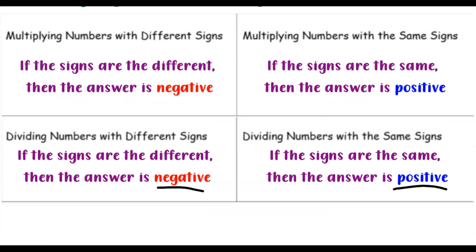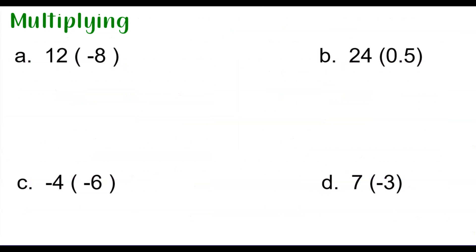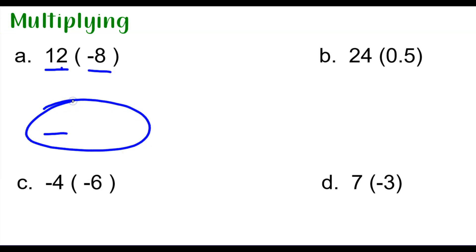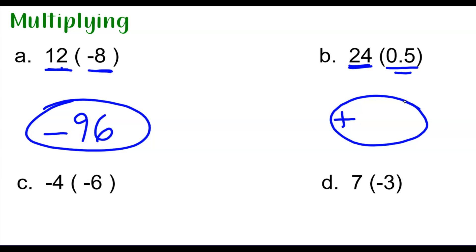Let's take a look at a couple of problems and practice that. In the first example, the signs are different, so before you even multiply the numbers, you know a positive times a negative gives a negative answer. Figure out the sign first, then multiply: 12 times 8 is 96, so the answer is negative 96. In the second example, both numbers are positive — same signs — so the answer is positive. 24 times 0.5, or half of 24, is 12.